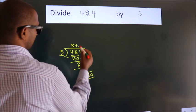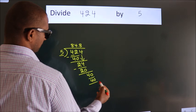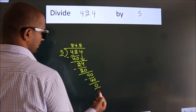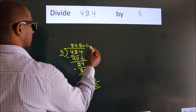In the 5 table, 5 times 8 equals 40. Now we subtract. We get 0. We got remainder 0. So this is our quotient.